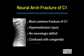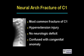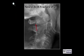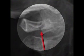Neural arch fractures of C1 are the most common fractures of C1. These are usually hyperextension injuries with no neurologic deficit. They can be confused with congenital anomalies and you have to be careful of that. This is an example of a neural arch fracture of C1 — the red arrow is pointing to a vertical lucency, which is a fracture through the posterior neural arch.